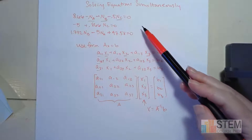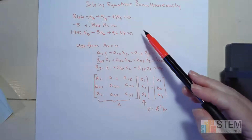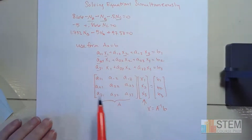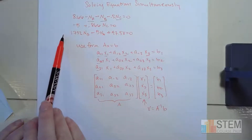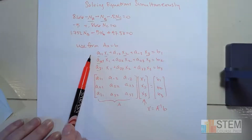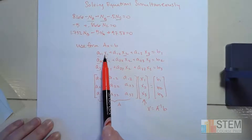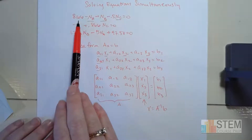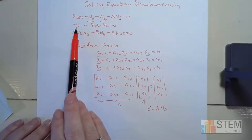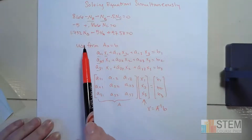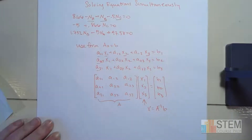Now let's apply it to this problem, and then I'll show you how to do it on the TI-84 calculator. The first thing you want to do with your equilibrium equations is write them in this form. Make sure your unknown variables are all in the same order, and move values like 8.66 or negative 5 to the right-hand side. The only thing on the left should be terms with unknown variables in them — everything else goes to the right. That's step one.